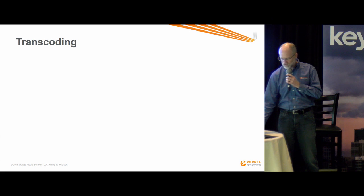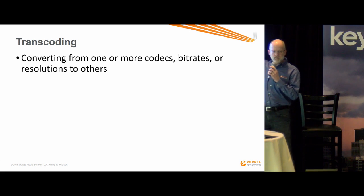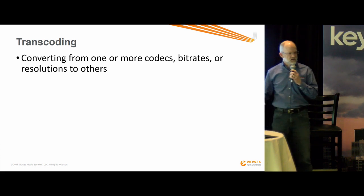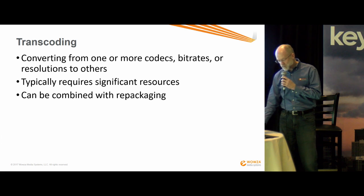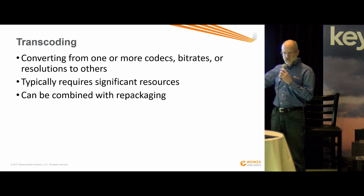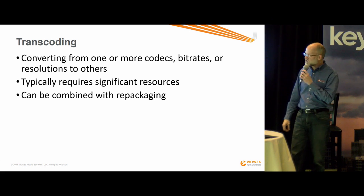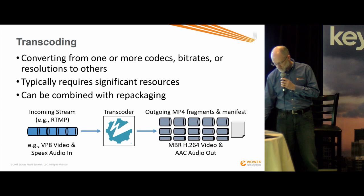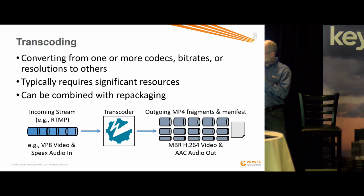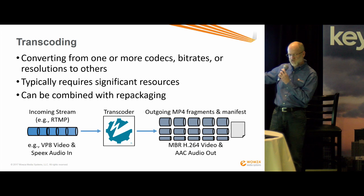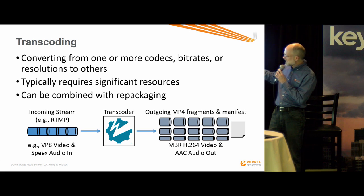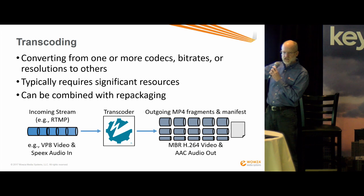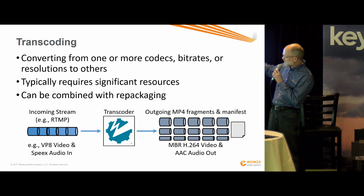Conversely, there's something called transcoding. That's the idea that you're taking content coming in at one bitrate, codec, or resolution and converting it to some other bitrate, codec, or resolution. It may be called transrating if you're going from one bitrate to another, transcoding if you're actually changing codecs, or trans-sizing if you're changing the resolution — but it's all generally referred to as transcoding. Essentially you bring in one stream, maybe VP8 video and Speex audio from old Flash, transcode it to H.264 and AAC in multiple bitrates, and split it into little chunks for adaptive bitrate streaming, because ABR relies on those chunks to switch quality levels.